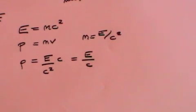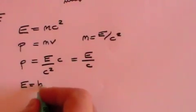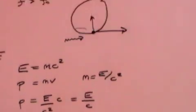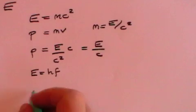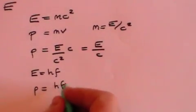But we also know that E equals HF. That was what Einstein identified in the photoelectric effect. So coupling the two together, you get that P equals HF divided by C.